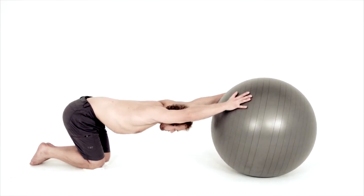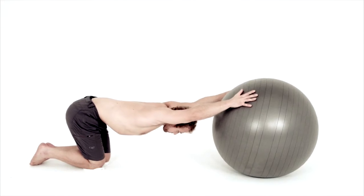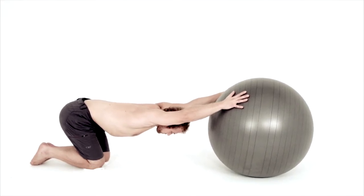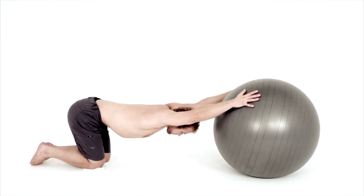Your hands are on top of the ball, shoulder width apart. Straighten your arms, pushing the ball away from you and go into a flat back position.